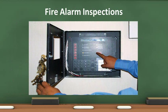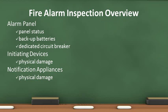Fire alarm inspections are conducted to assure the fire alarm system will operate as it was designed under fire conditions. A fire alarm inspection always starts at the alarm panel. Check the indicator lights and digital readout. Check the backup batteries for installation date and signs of corrosion. Go to the electrical panel or switch and check the circuit breaker lockout. Spot check initiating devices and notification appliances throughout the building for physical damage.